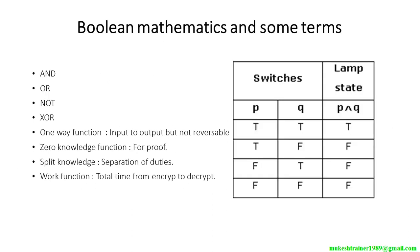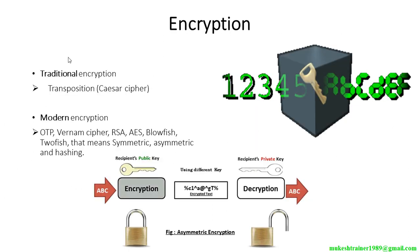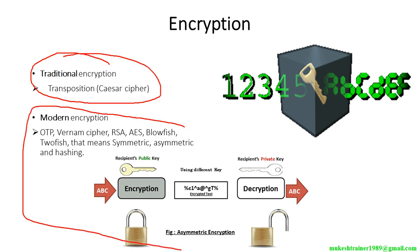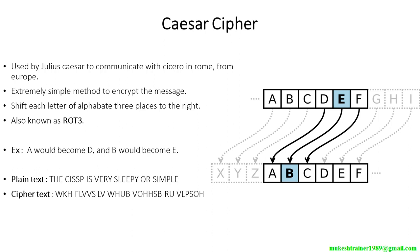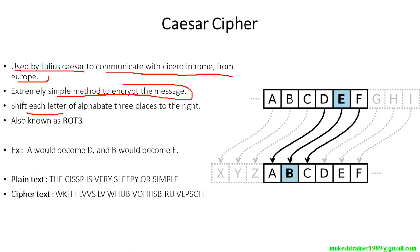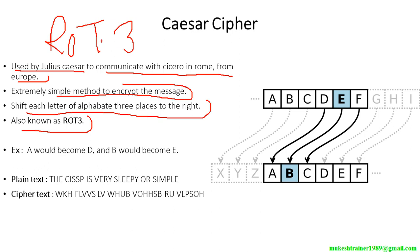Caesar cipher — let us talk about this traditional encryption method. Caesar cipher was used by Julius Caesar to communicate with his commanders in Rome from Europe. It is an extremely simple method to encrypt a message: each letter of the alphabet is shifted three places to the right, also known as ROT3.